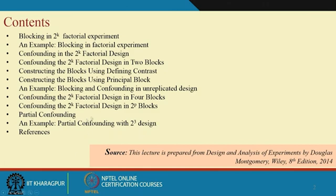All these topics will be covered across two lectures of 30 minutes each. The source of this lecture is the book by Montgomery, 'Design and Analysis of Experiments.' The relevant chapter on blocking in 2^k factorial design is Chapter 7 in this edition.